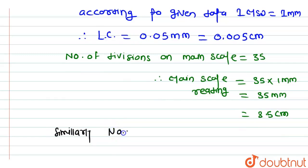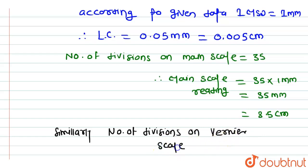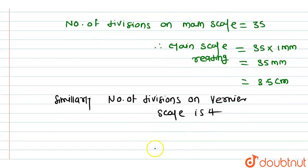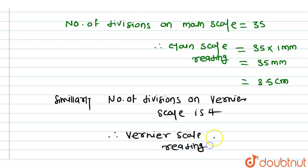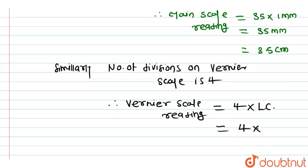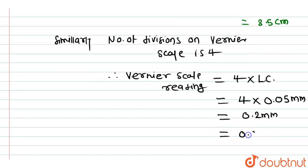Similarly, the number of divisions on the Vernier scale is 4. Therefore, the Vernier scale reading = 4 × least count = 4 × 0.05 mm = 0.2 mm = 0.02 cm.